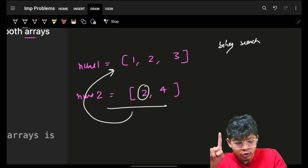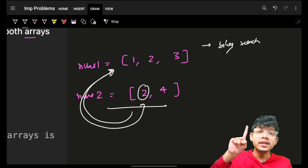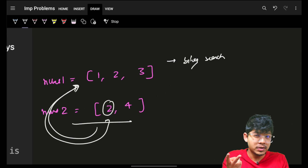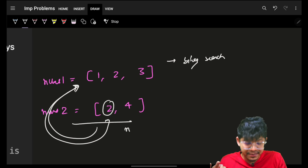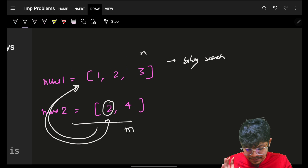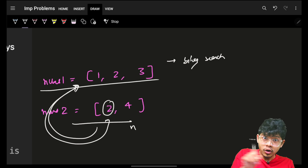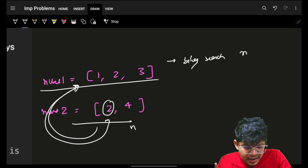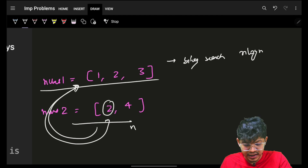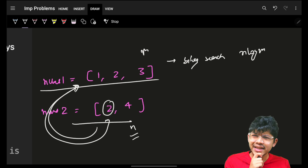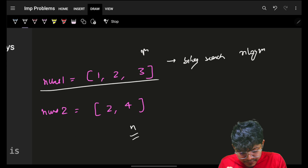With the binary search option, we are iterating on n elements from nums2 and applying a binary search on nums1 of length m. So the time complexity will be roughly O(n log m). But can we improve it?